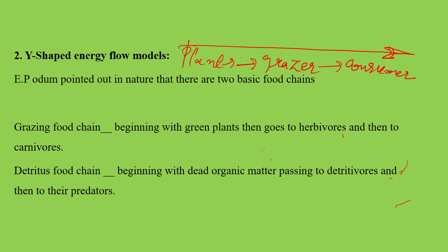So as per the single channel model, the chain starts from green plants, which are the producers. The grazing food chain starts from green plants. So whatever we discussed in the single channel energy flow model, that was the grazing type of food chain — energy was flowing through a single channel.